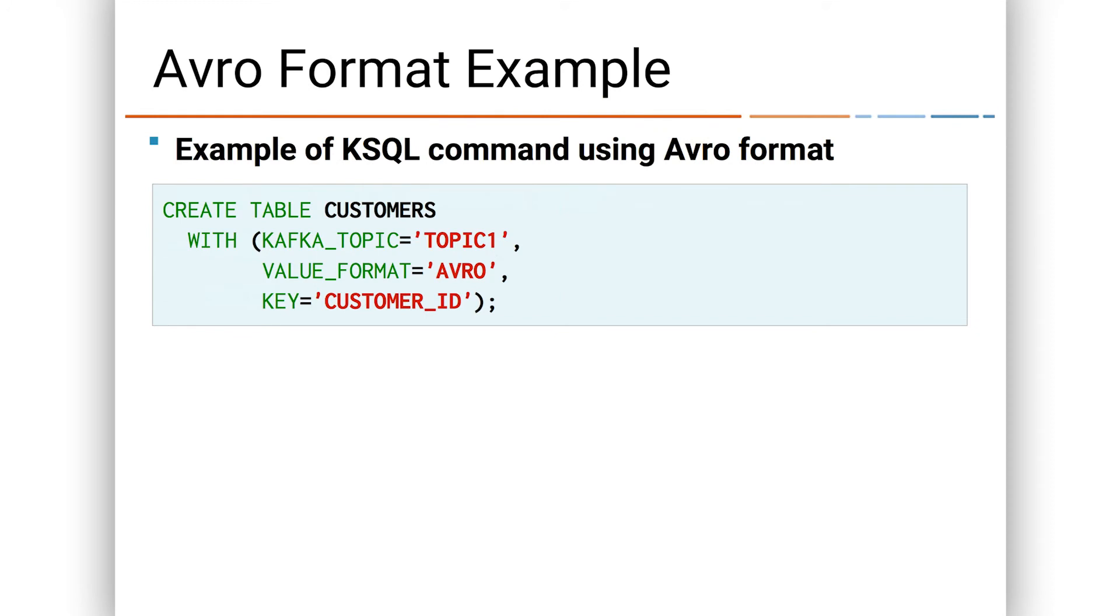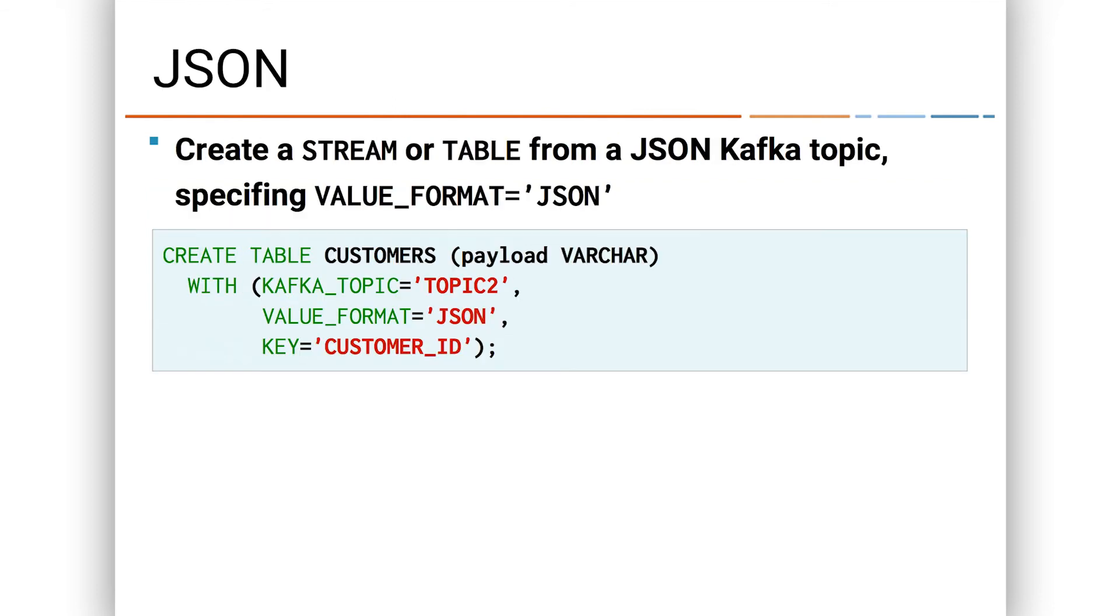So creating a customer table would be a little simpler. We have a topic lyrically called topic one, as you see here. And now we say its value format is Avro. The key is going to be customer ID and we just create that table. We don't even mess with schema or anything like that. It's going to all be extracted from the topic through the schema registry. If I were to do that with JSON on some other topic called famously topic two, I'd say value format, JSON key equals customer ID. And now I have to be specific about the metadata. And here, I'm just going to have that single column called payload.